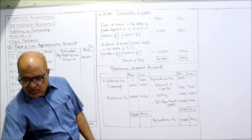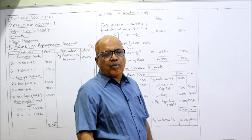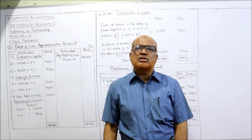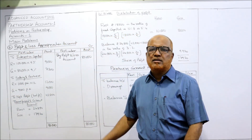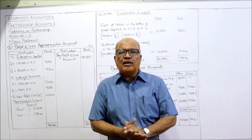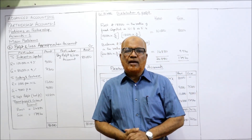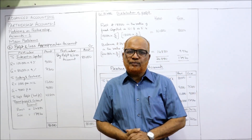So in this problem we have prepared the profit and loss appropriation account and also the current accounts of both partners. We will continue with the next problem in the next video.